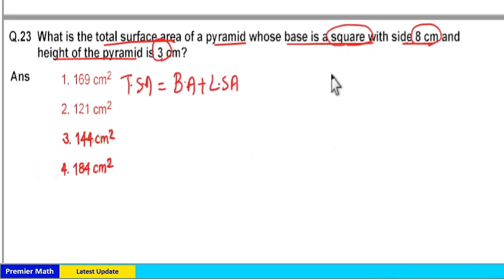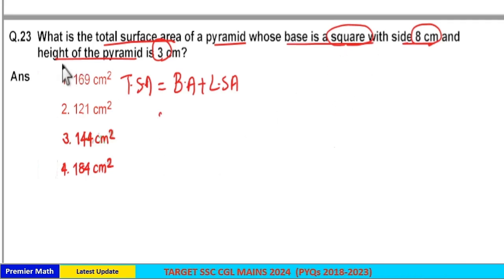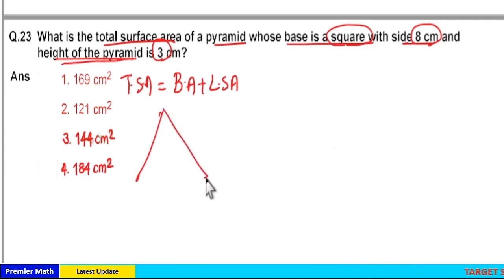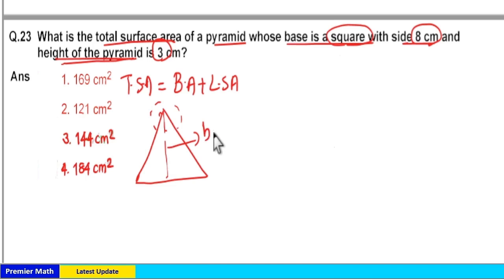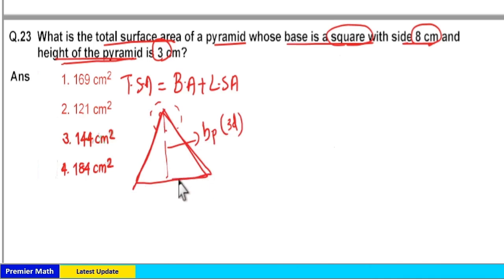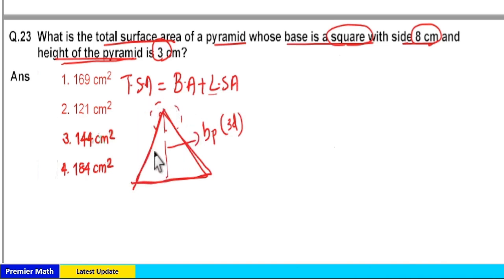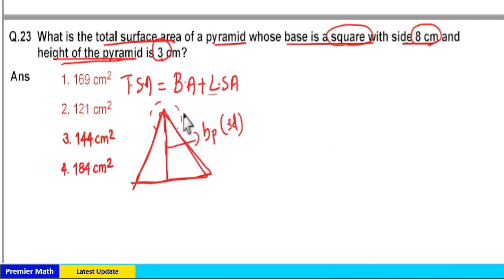The lateral surface area of this square pyramid involves 4 triangles on the lateral side. Don't confuse the height of the pyramid with the height of the triangle. The pyramid height is a 3D measurement. We need to calculate the height of the triangle separately to find the lateral surface area — don't confuse it with the height of the pyramid.